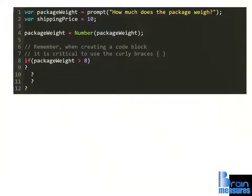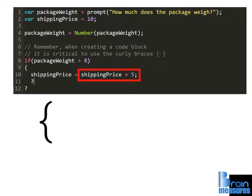Start by inserting a curly brace to open up a code block. Now, write the mathematical expression to raise the shipping price. For this, we simply take the shipping price variable and add the value of 5 to get our new shipping cost.